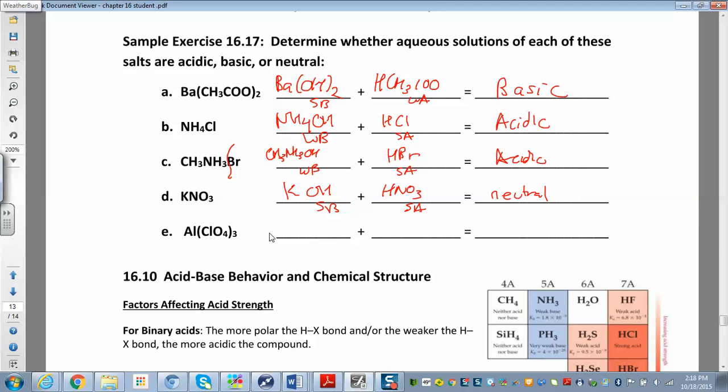Over here you have aluminum. We'll add the hydroxide and perchloric acid. This is the strong acid, that's a weak base, so this is going to be acidic.